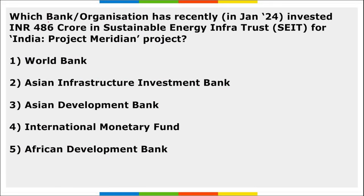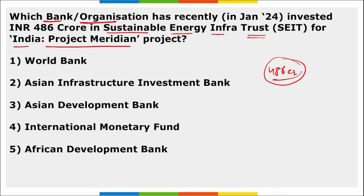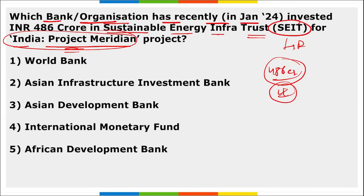Asia Infrastructure Investment Bank (AIIB) recently invested Rs 486 crore in Sustainable Energy Infrastructure Trust bonds for India's Project Meridian.